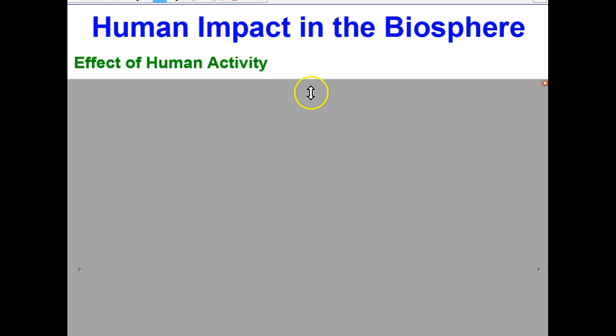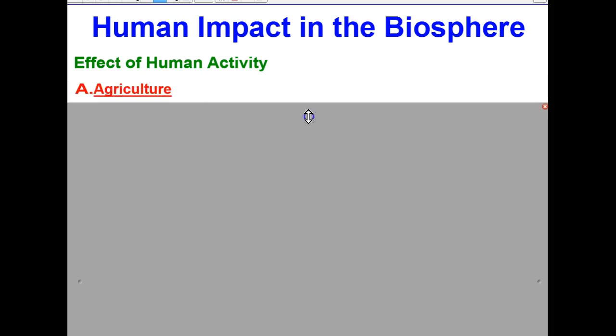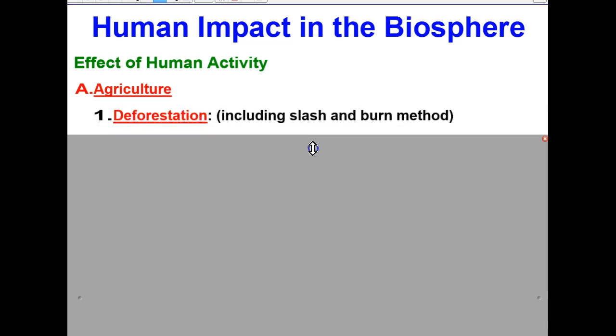Let's take a first look at the negative effect of human activity through agriculture. When doing agriculture, the first thing to take into consideration is that we had to do some deforestation. This includes what is called the slash and burn method — just cut the trees down, burn them up, and then prepare the land to be able to grow crops.